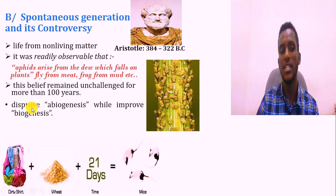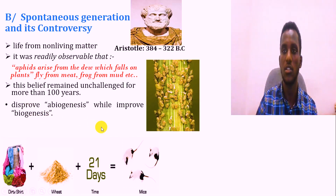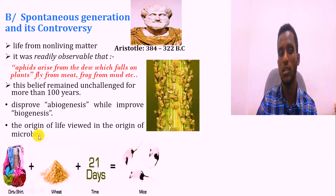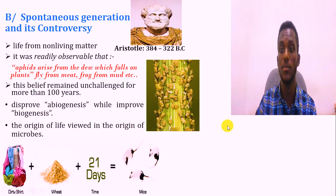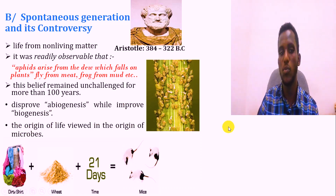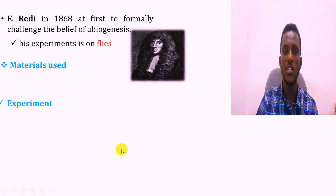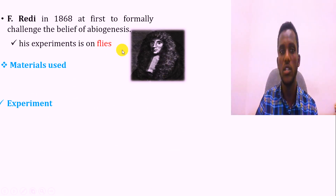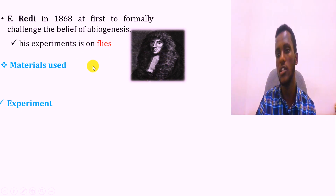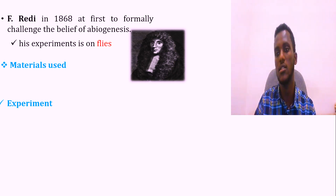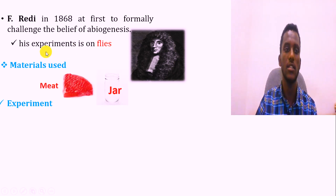Redi disproved abiogenesis and supported biogenesis, or the non-spontaneous generation theory. His experiment involved placing meat in jars — one open and one completely sealed and closed — to test whether flies could arise spontaneously from the meat.